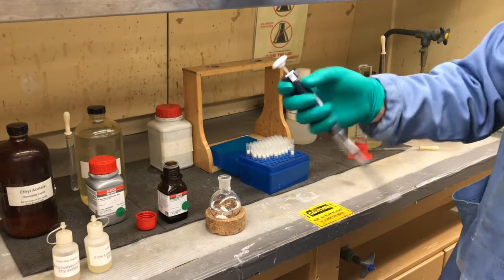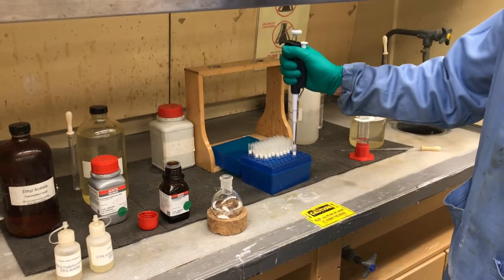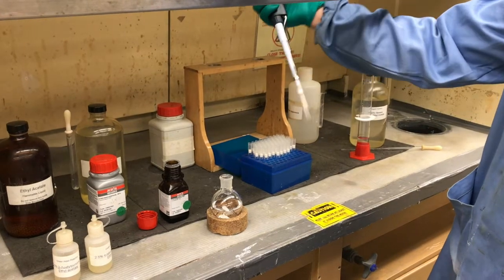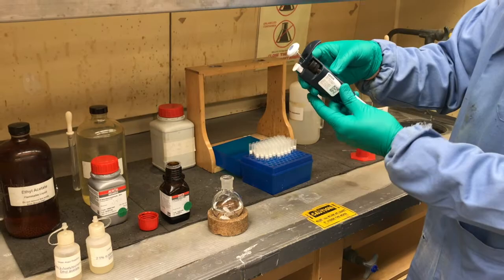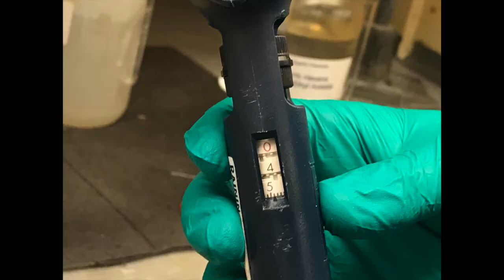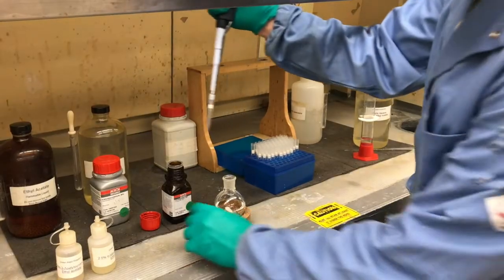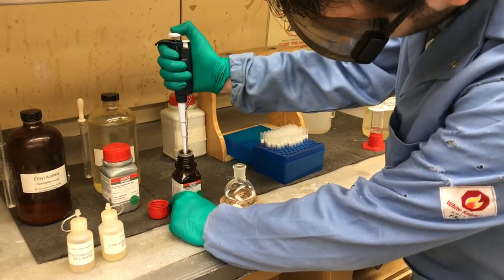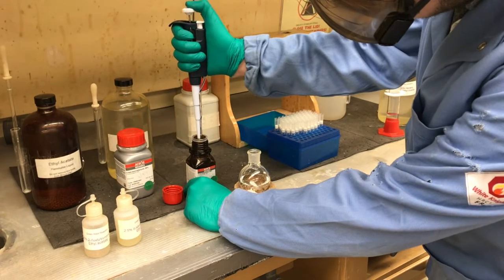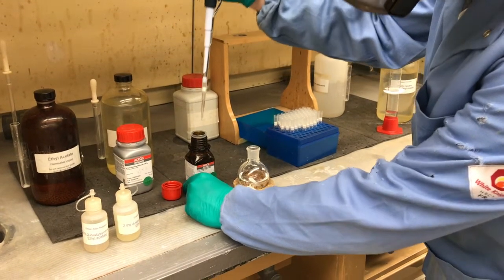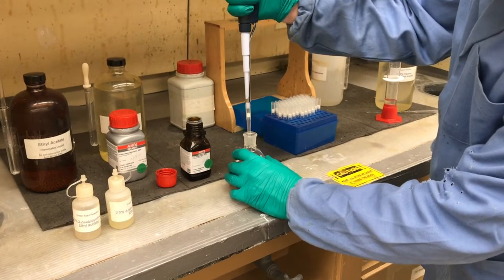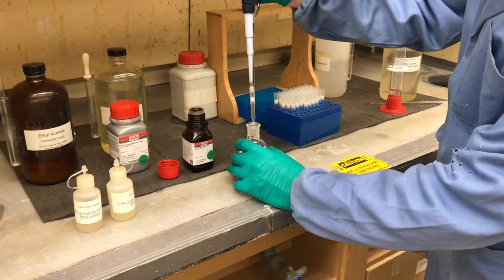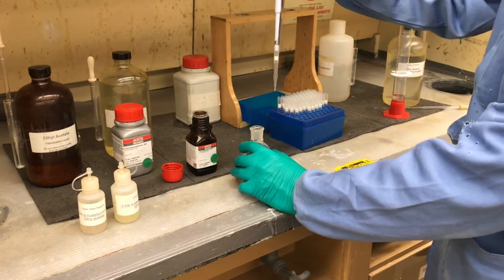So what you have to do is take your pipetter, press it down onto the tip. It's attached, and we already set it to the 0.448 ml that we needed. All we have to do is bring it down into the solution, press it down, bring it up, take it over, and then press down. And now we've added our 2-acetylpyridine.